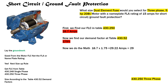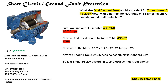We do the math: 16.7 multiplied by 1.75 gives us 29.22 amps. We drop it down to 29, then head to table 240.6(A) to find the next standard size overcurrent device — and we select 30 amps. That's our choice: a 30 amp dual element fuse, which is the first point of disconnect and short circuit ground fault protection for this motor.